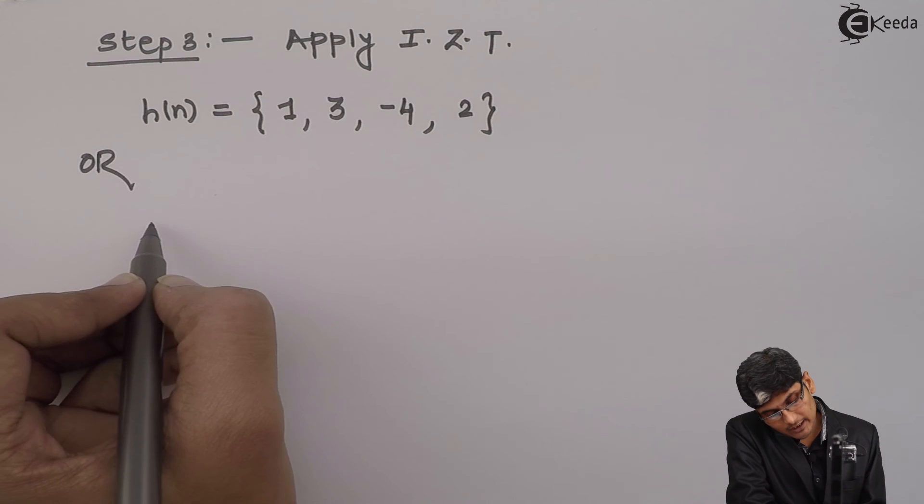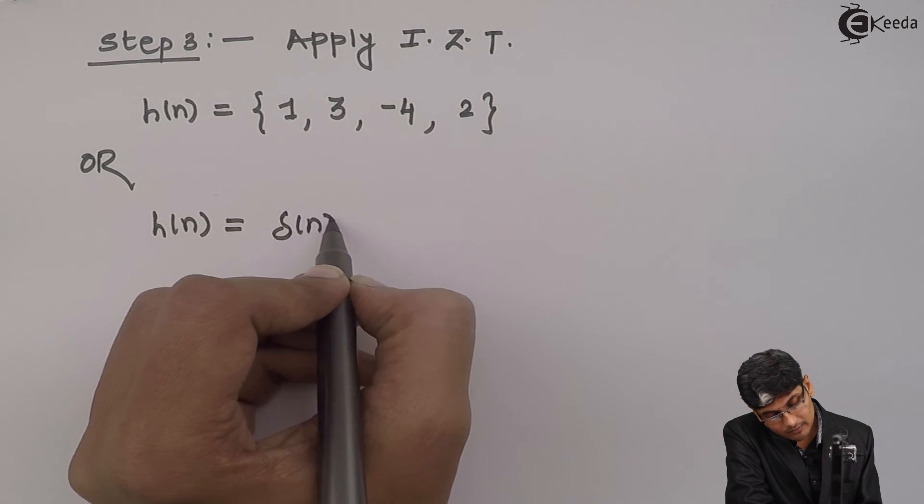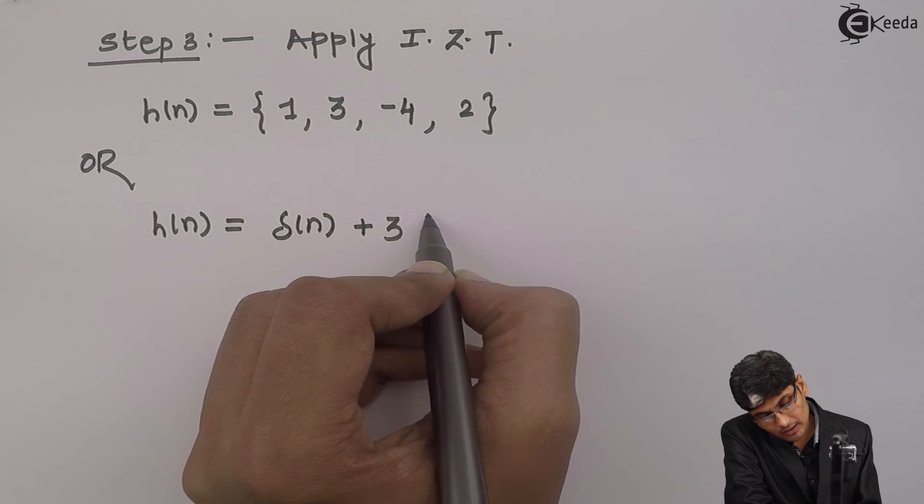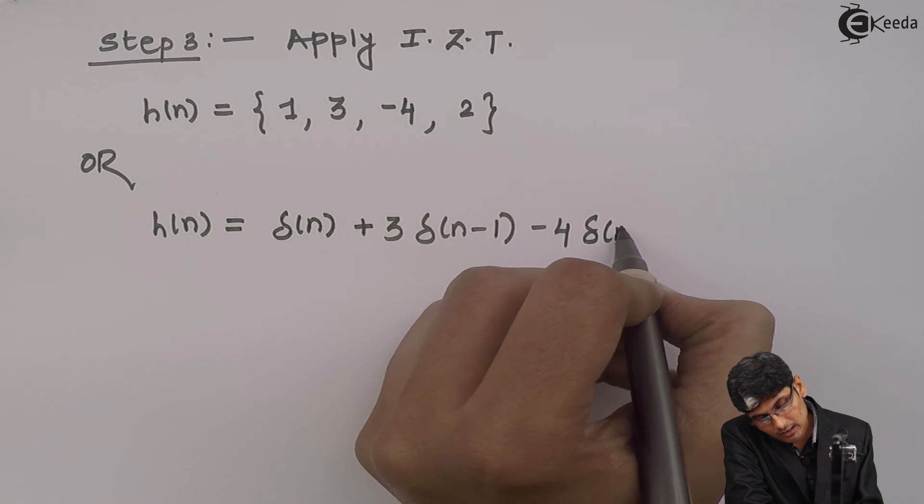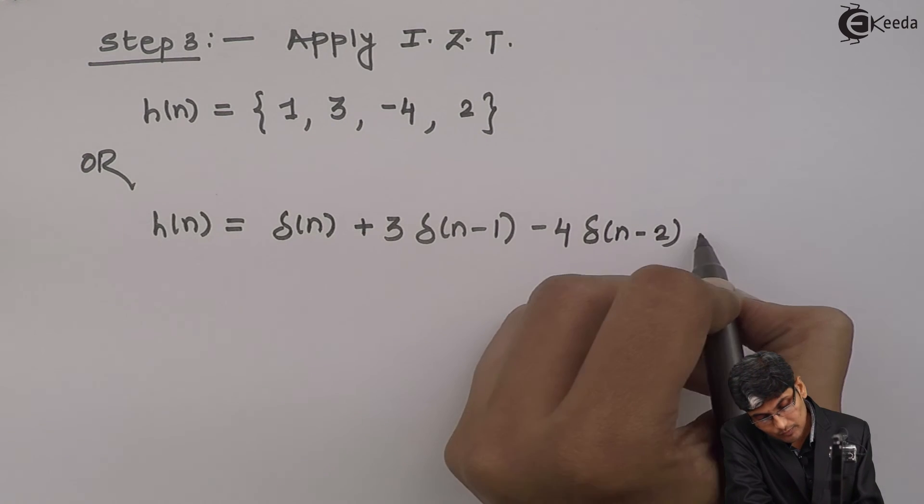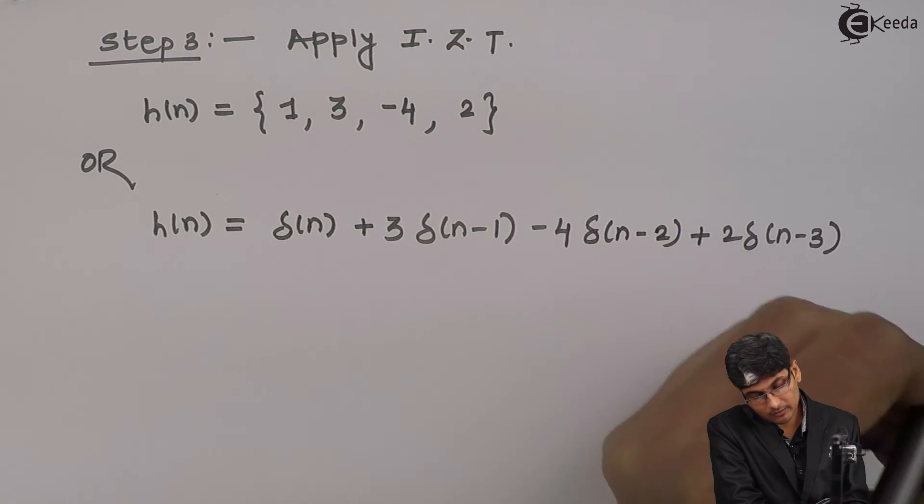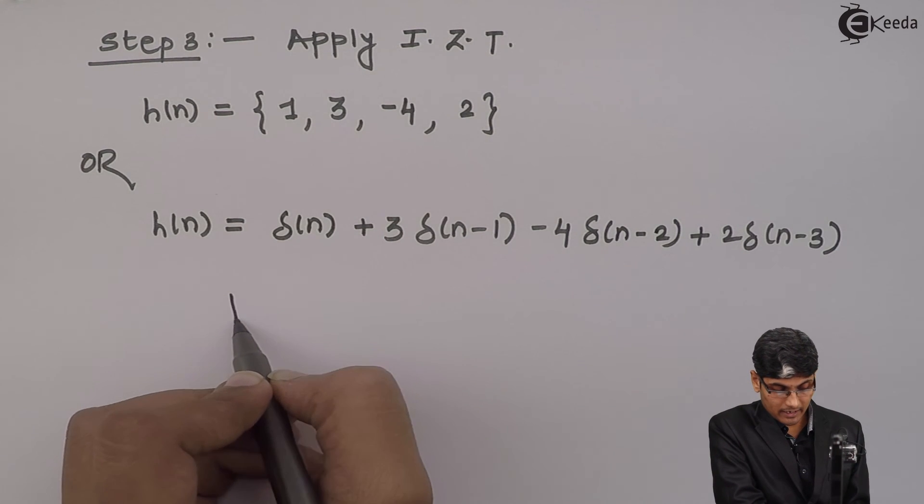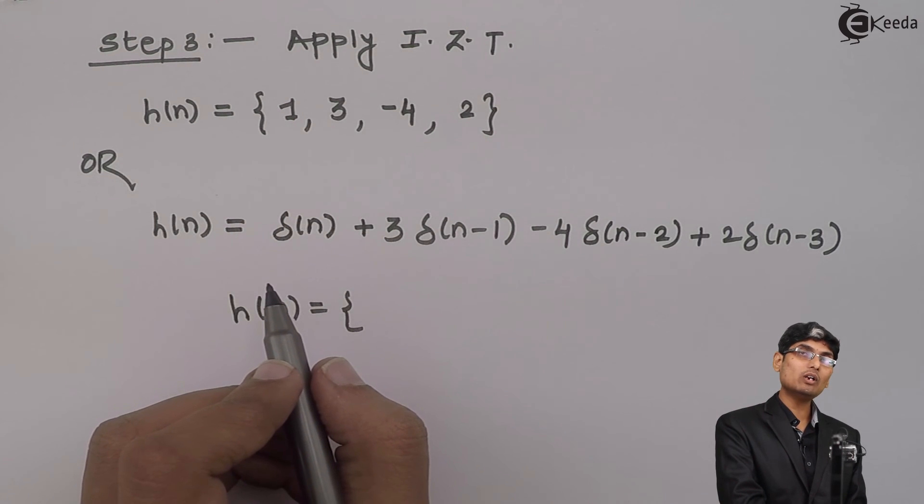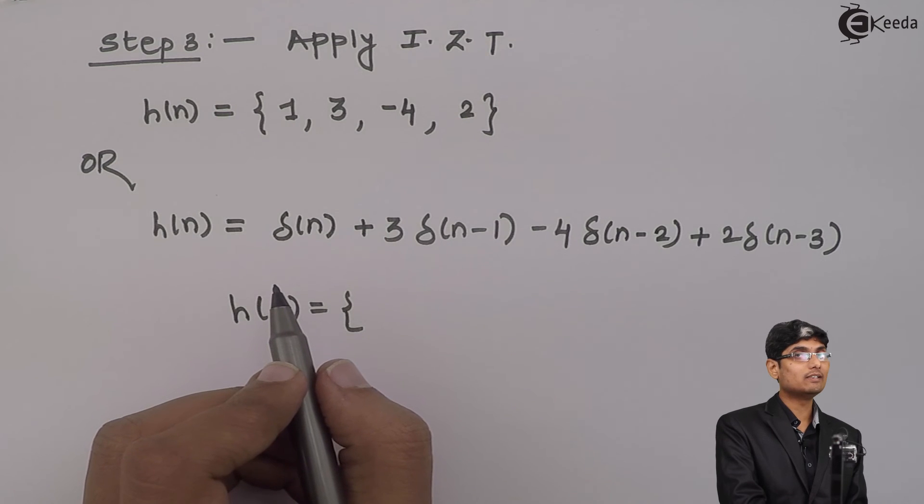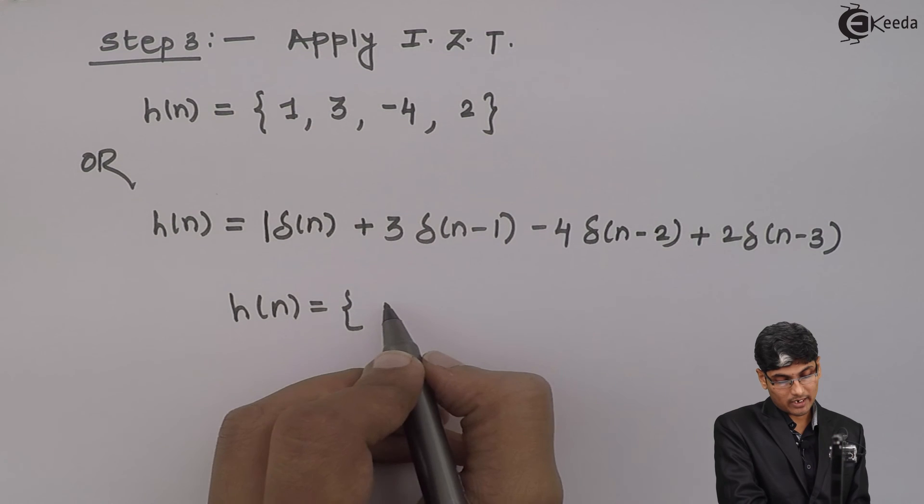Or you can also write it as h of n equals to delta n plus 3 delta n minus 1 minus 4 delta n minus 2 plus 2 delta n minus 3. What does it reflect? Again, I can write it as delta n. This signal exists only at n is equal to 0 and 0 everywhere. So, at n is equal to 0, the amplitude is 1. So, I write 1.